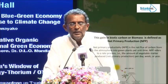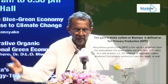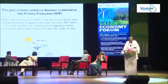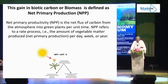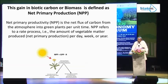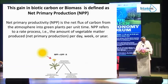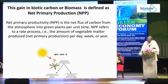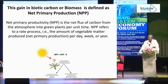The gain in biotic carbon or biomass is defined as net primary productivity, NPP. This basically is photosynthesis: sunlight, water, carbon dioxide, and life. Within the leaf of a plant, it can capture solar energy, give us oxygen to breathe, and give us food. That's photosynthesis — that's net primary productivity. This is the basis of life on this planet.